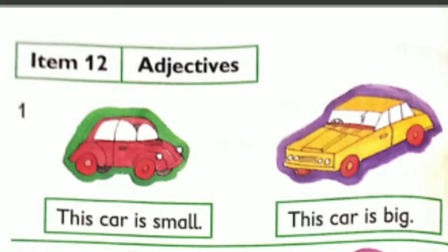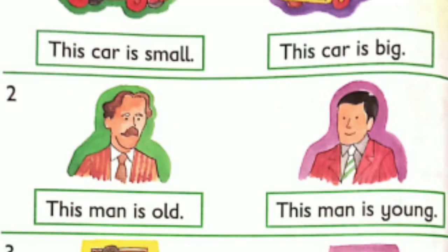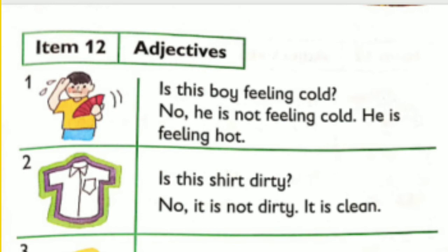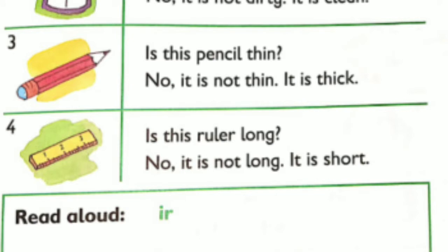Item 12 — Adjectives. This car is small. This car is big. This man is old. This man is young. This boy is tall. This boy is short. This cat is thin. This cat is fat. Is this boy feeling cold? No, he is not feeling cold. He is feeling hot. Is this shirt dirty? No, it is not dirty. It is clean. Is this pencil thin? No, it is not thin. It is thick. Is this ruler long? No, it is not long. It is short.